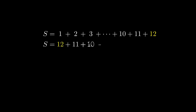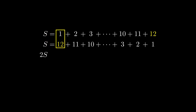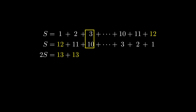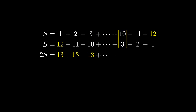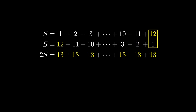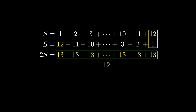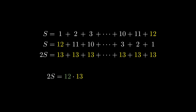The sum from 1 to 12 in ascending order is the same as that in descending order. When we add the sums together, we get 2 copies of the same sum. When we add 12 to 1, we get 13. When we add 11 to 2, we get 13. And when we add 10 to 3, we get 13 as well. Continuing the pattern, each pair of terms gives us 13. Since we added 12 pairs of terms, the total is 12 copies of 13. This means 2 times the original sum equals 12 times 13. Taking half on both sides, we obtain the sum equaling half times 12 times 13.